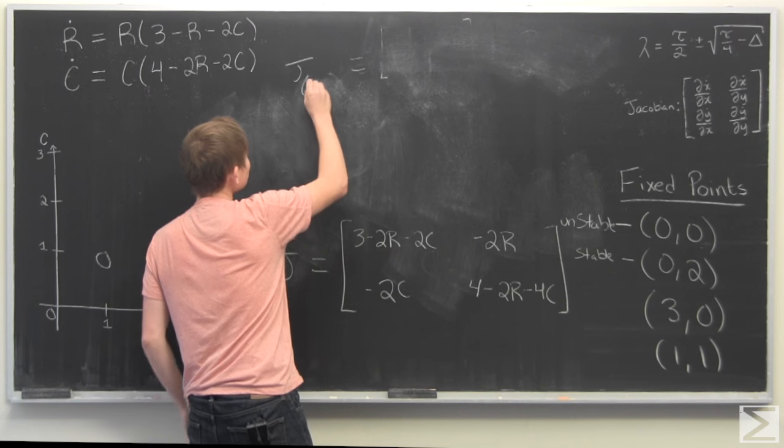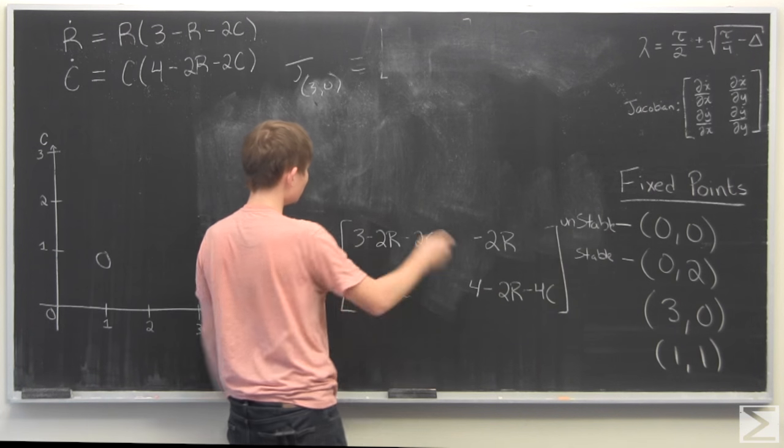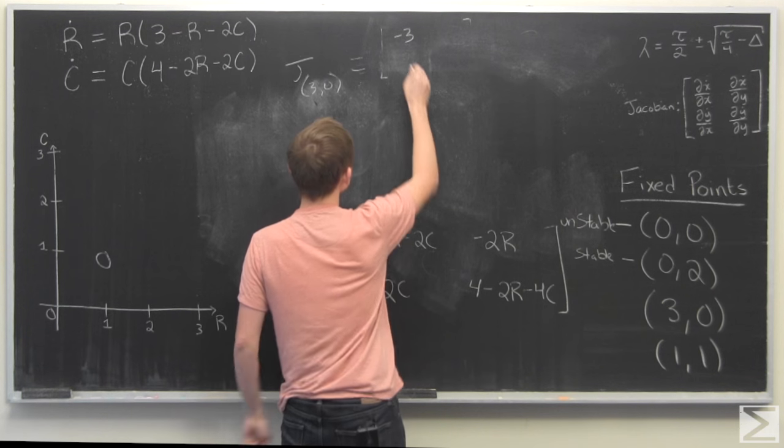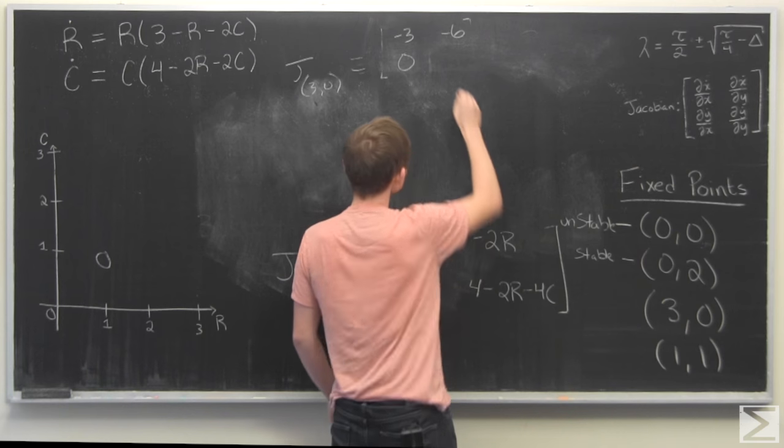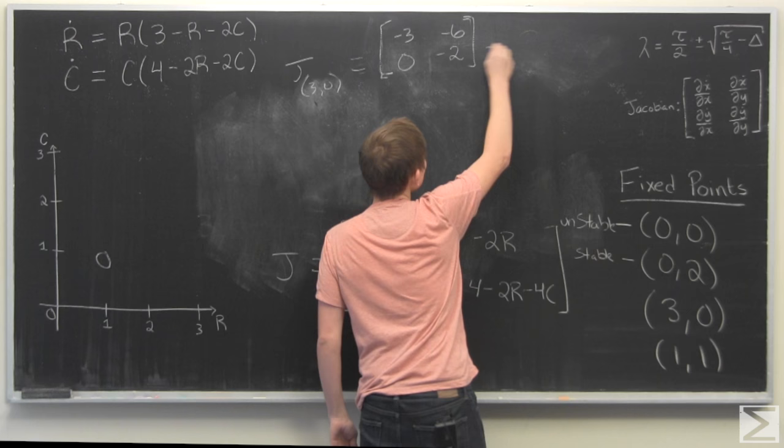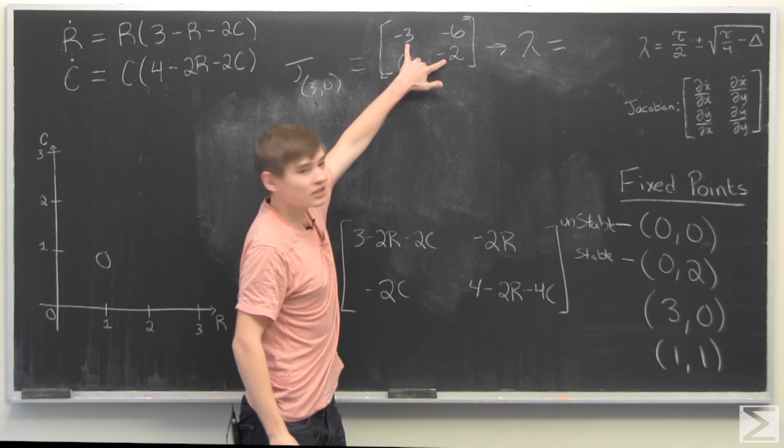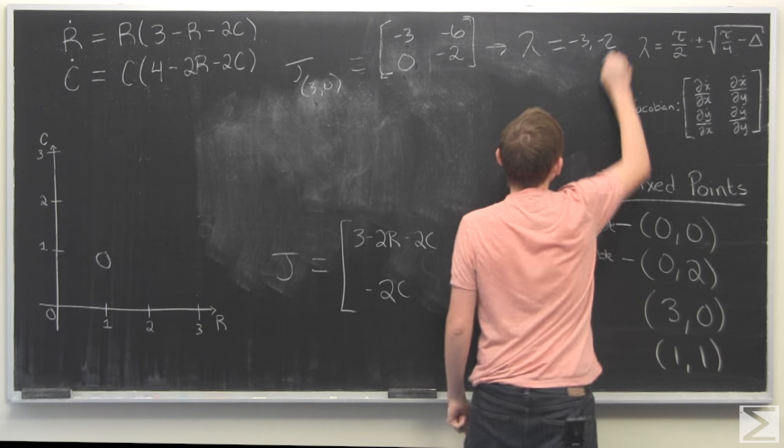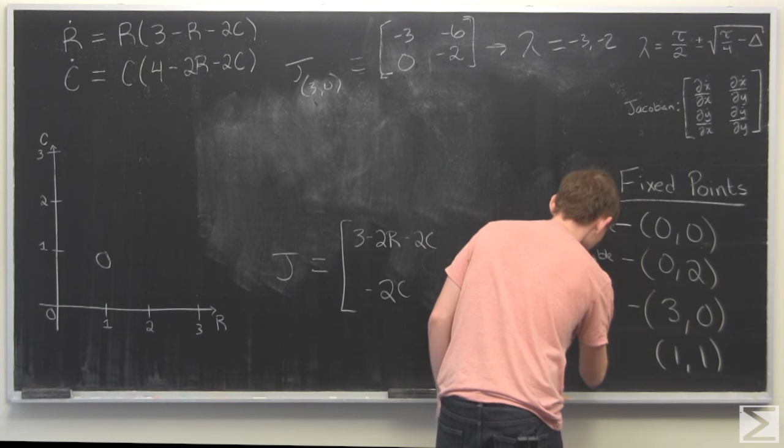So for fixed point 3, 0, we do this all again. We get negative 3, 0, negative 6, negative 2. This means that the eigenvalues, again, since this is 0, the eigenvalues are just going to be these, are negative 3, negative 2. Both are negative again. This is stable.